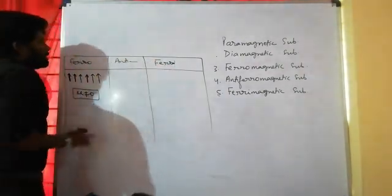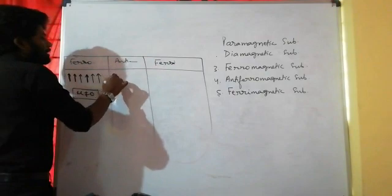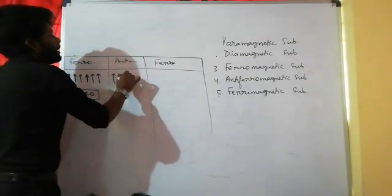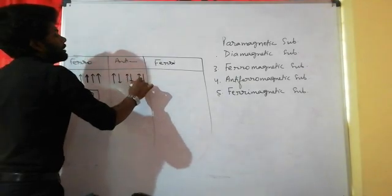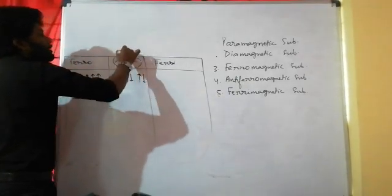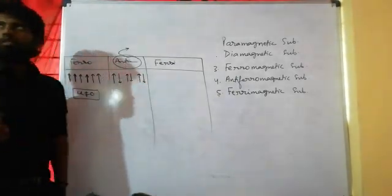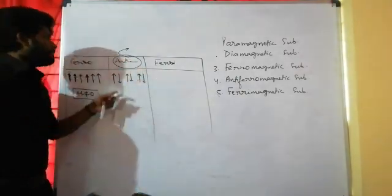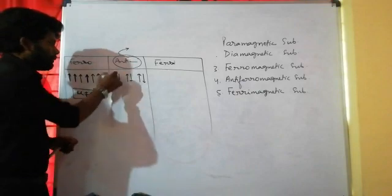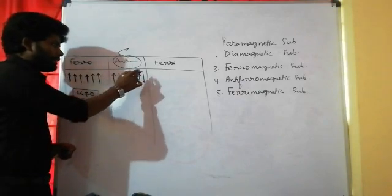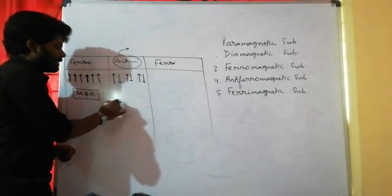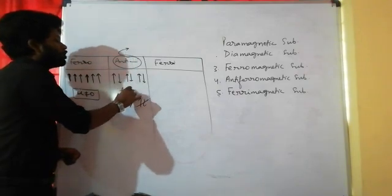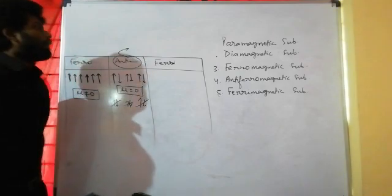In anti-ferromagnetic substances, when placed in a magnetic field, the domains are oriented in opposite directions but in equal numbers. So the domains cancel each other out, and the net magnetic moment — mu — is equal to zero.